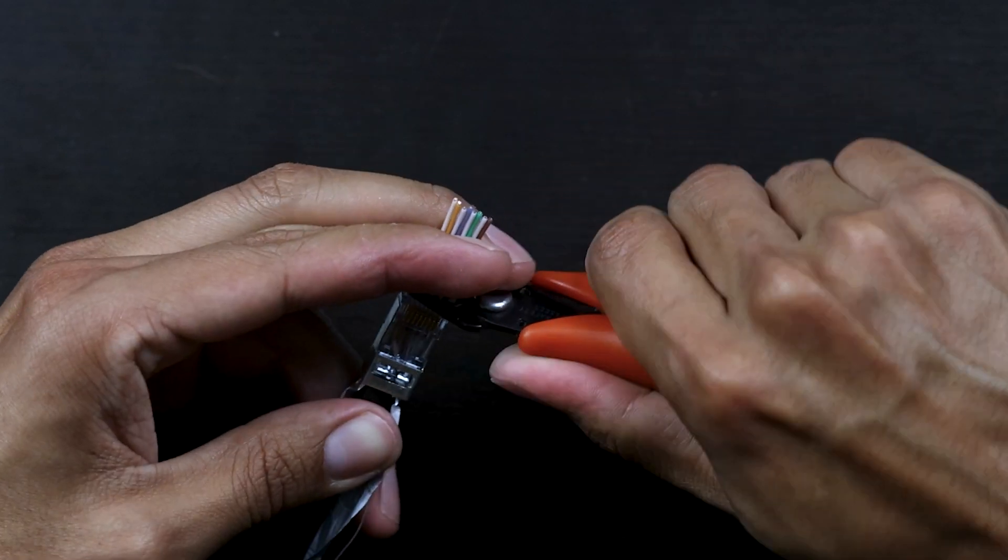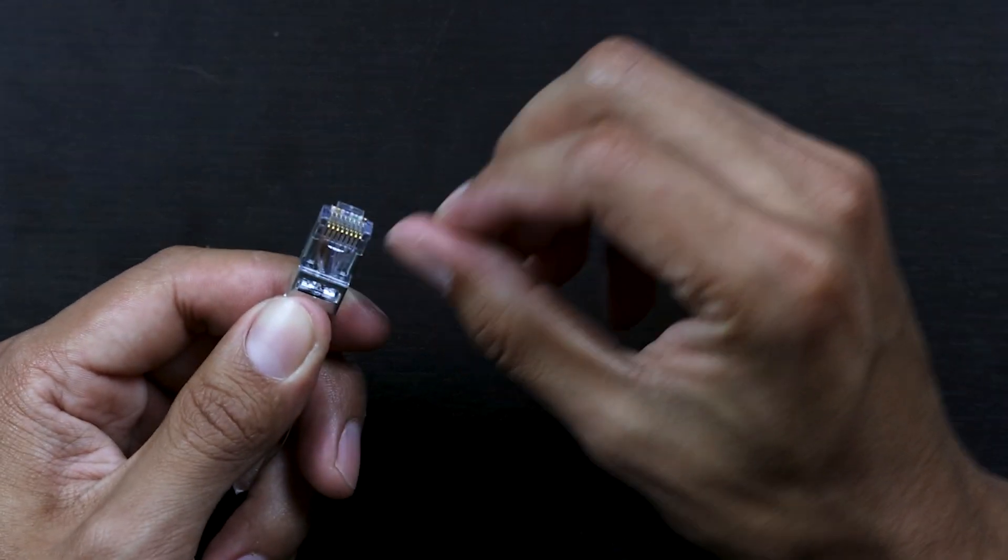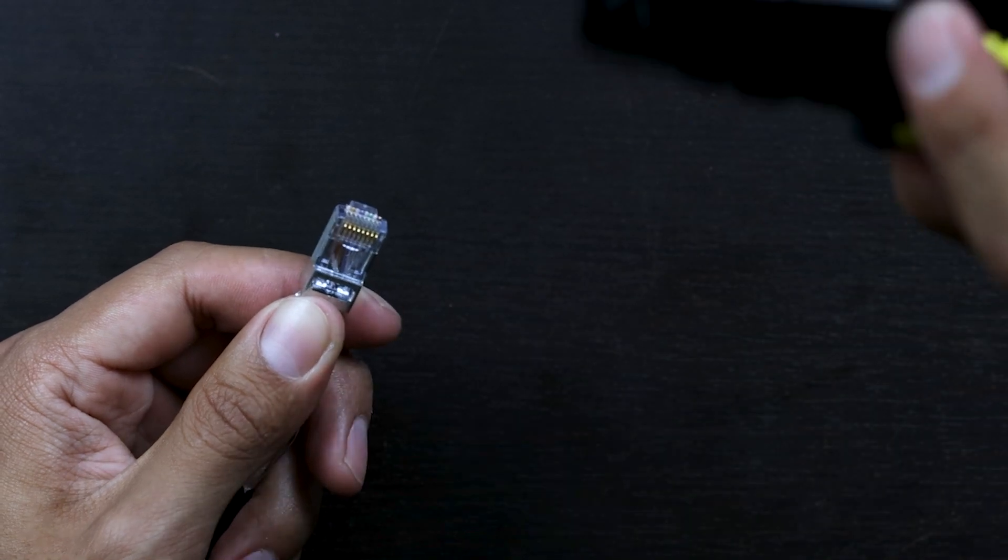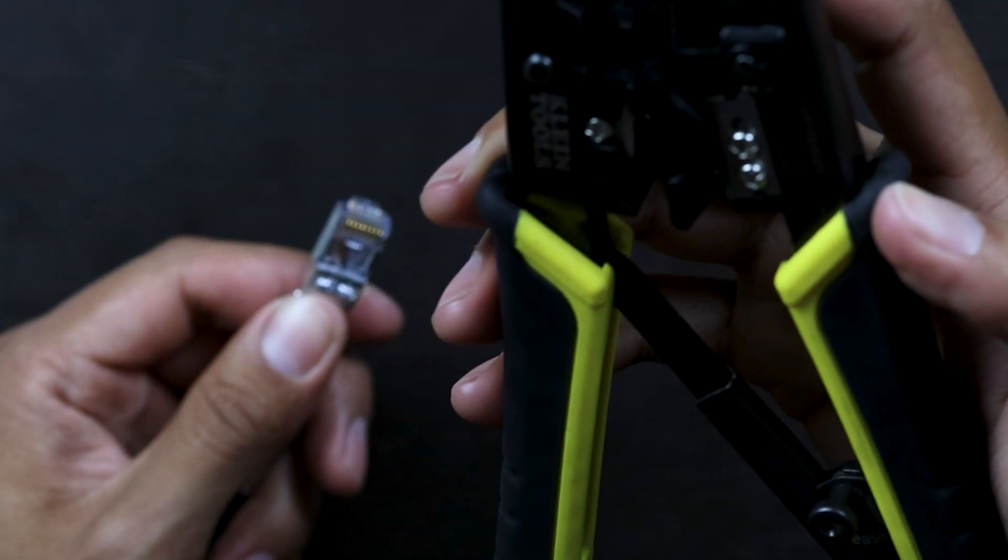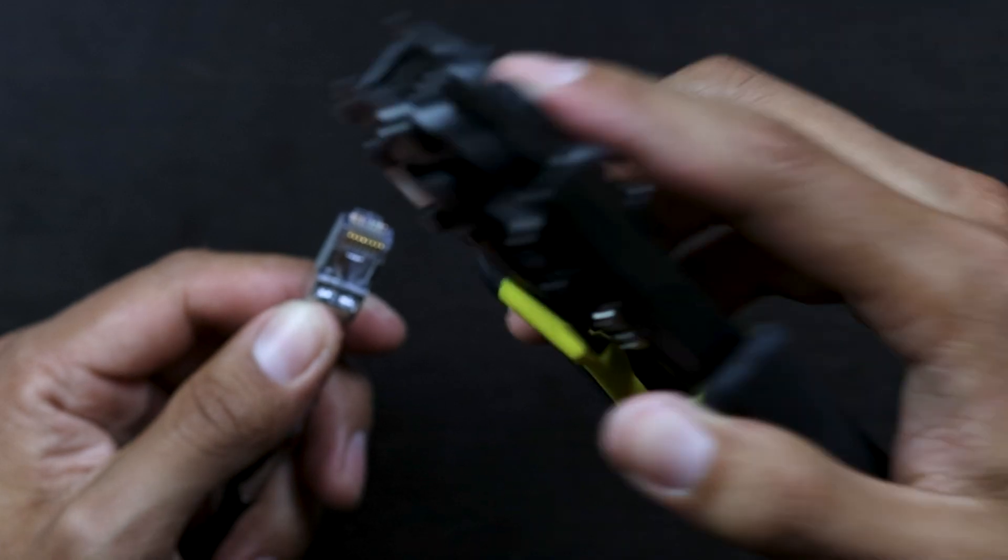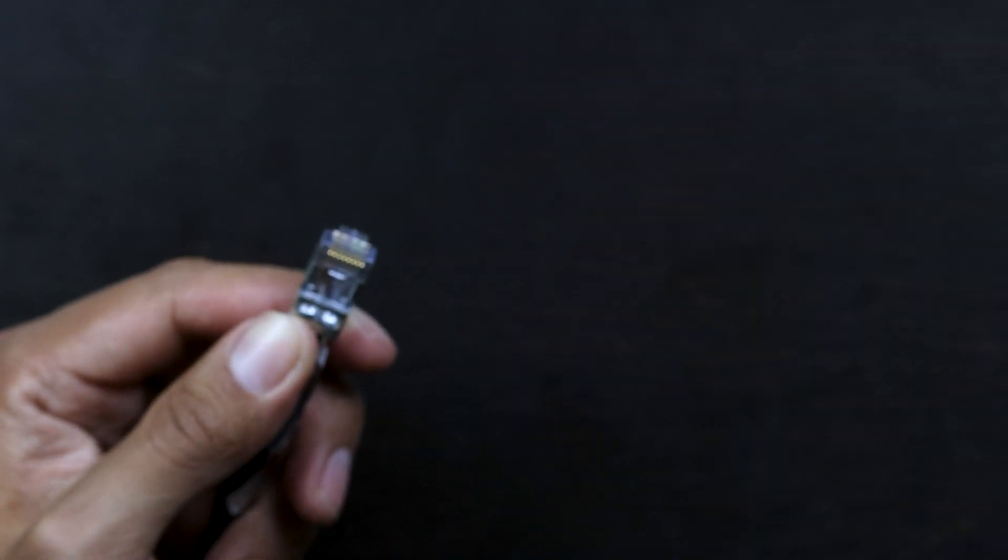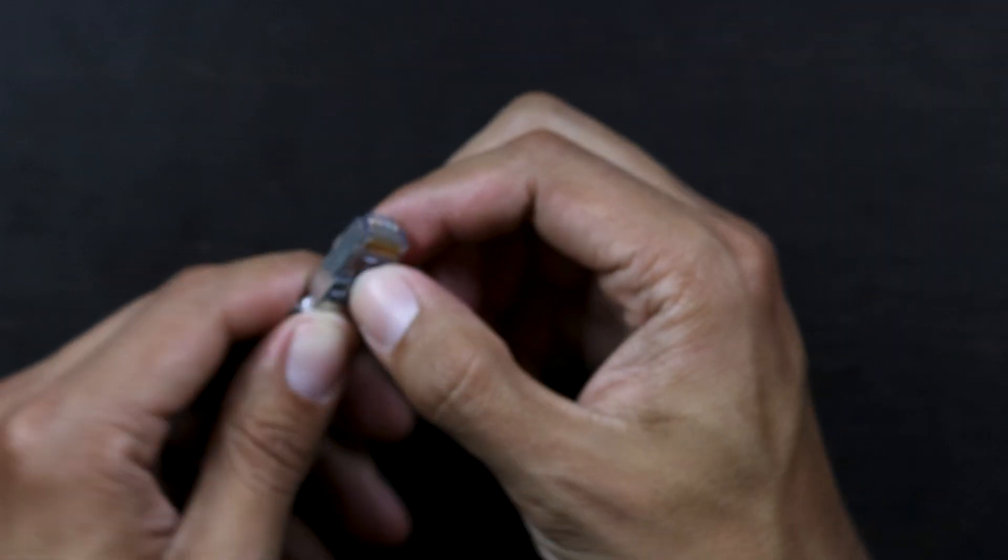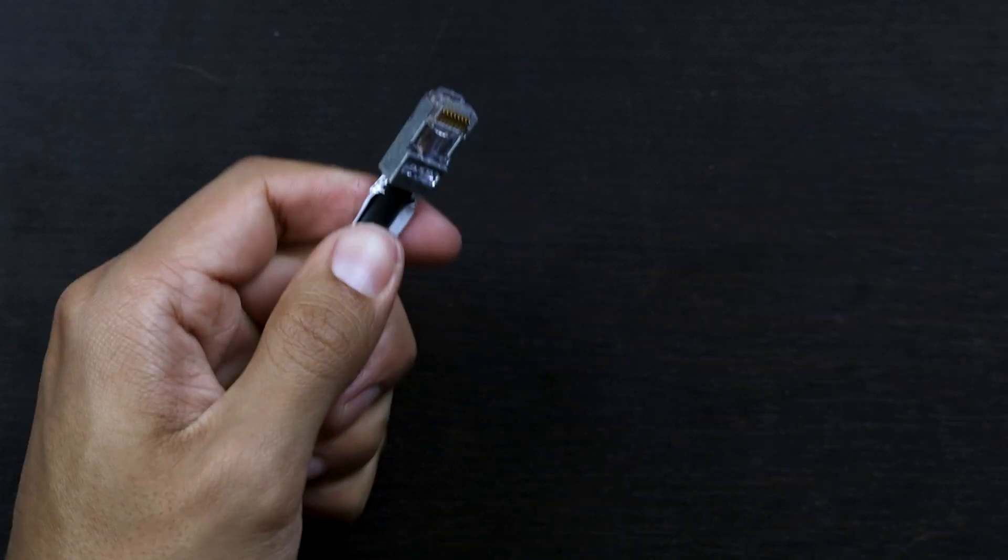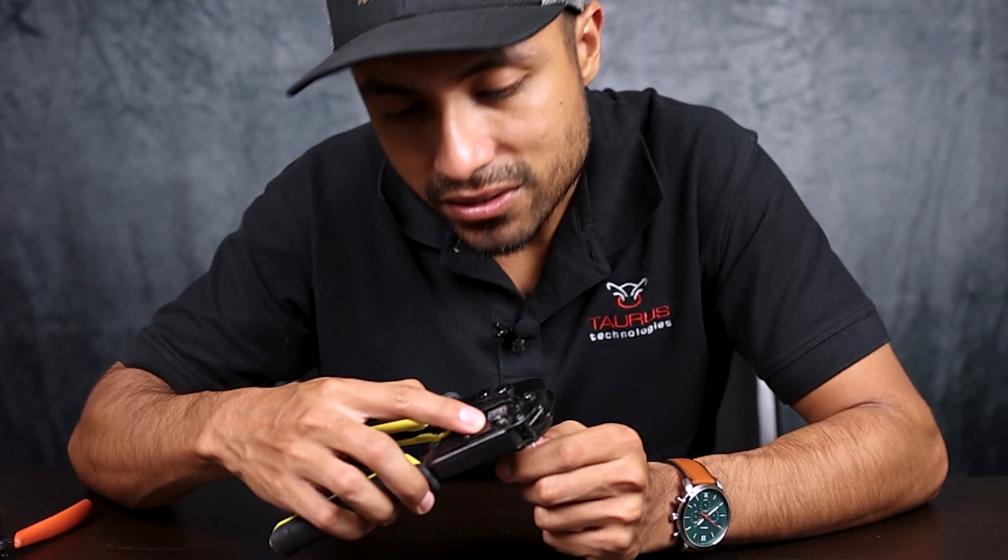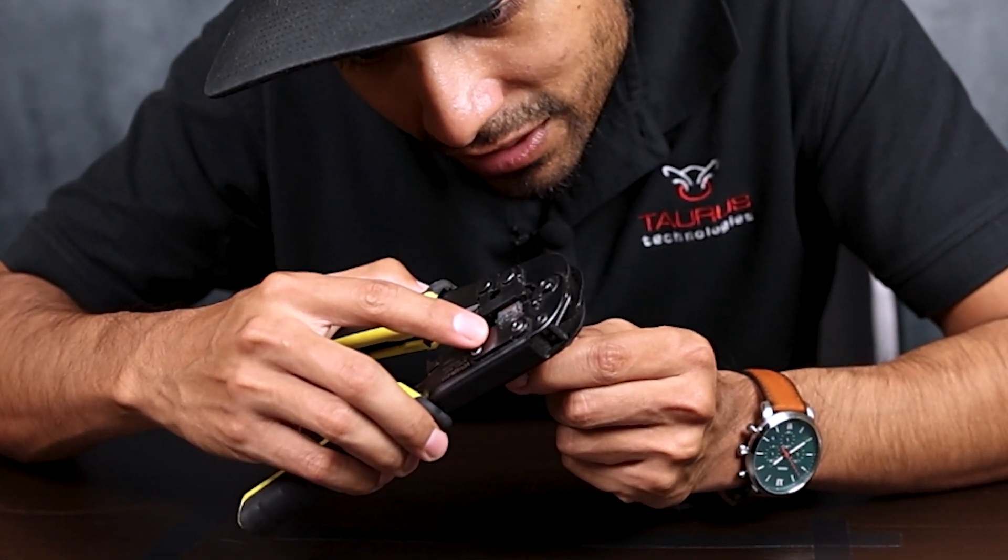And you take your flush cut. Some people like to use RJ crimpers that have a blade on them so that it cuts the conductors as it crimps. Personally, I don't like to do that. I think the conductors stick out too far. So once that's all lined up, I get my crimping tool, do a little double check on how far back I've pulled. Then once you're all good to go...